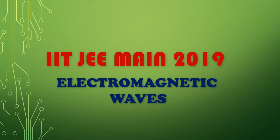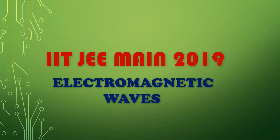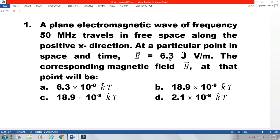In this video, I am going to solve all the questions of electromagnetic waves from 2019. The first question is: a plane electromagnetic wave of frequency 50 MHz travels in free space along the positive x direction. At a particular point in space and time, E equals 6.3 j-hat volts per meter. The corresponding magnetic field B at that point will be?